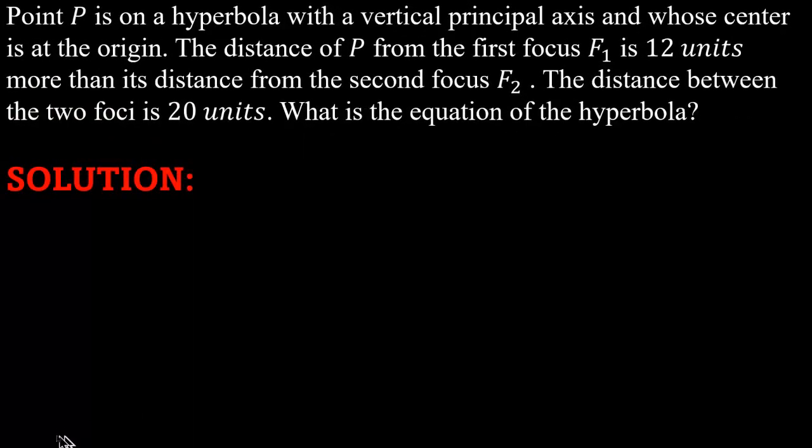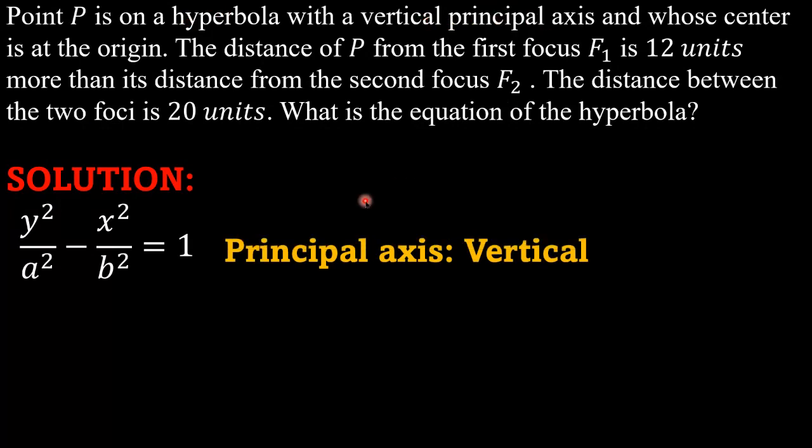Solution. Ito ang magiging equation natin. Why? Kasi ang sabi dito, vertical principal axis. So the principal axis here is vertical. So y² over a² minus x² over b² equals 1. And kaya ganito ang ating equation dahil nasa center din ito, or nasa origin siya.